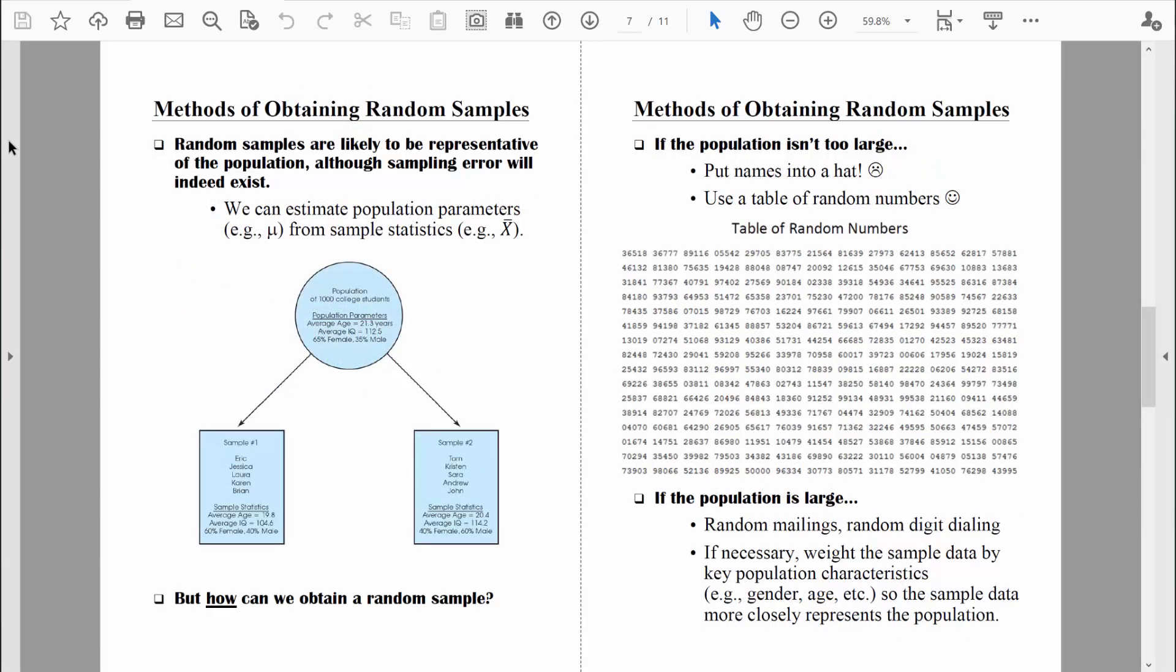The beauty of random samples is that they're likely to be representative of the population. Remember when I say that something is representative of the population, it means that sample has essentially the same characteristics as the population.